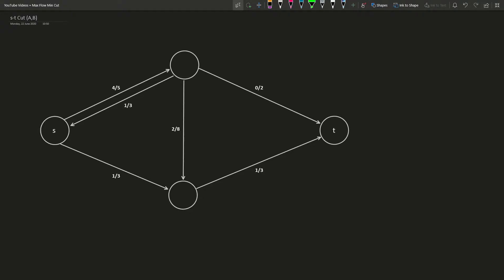An ST cut, AB, partitions the vertices of a graph such that the source S is in A and the sink T is in B. For example, we could partition this graph as follows.